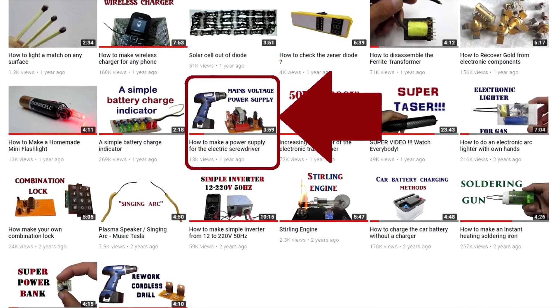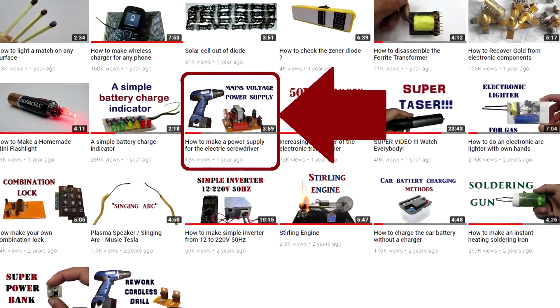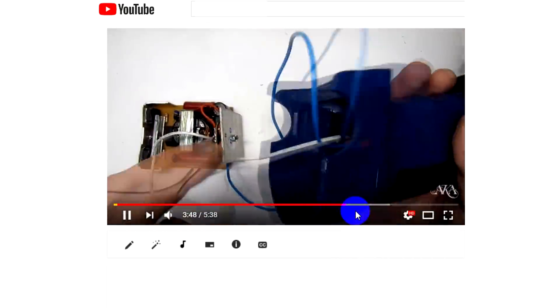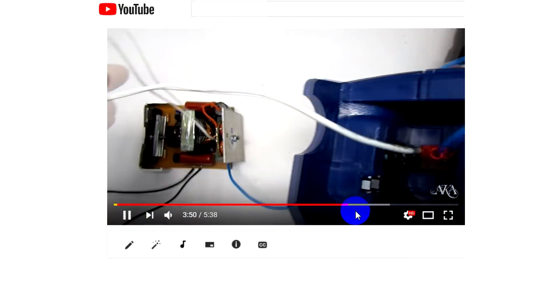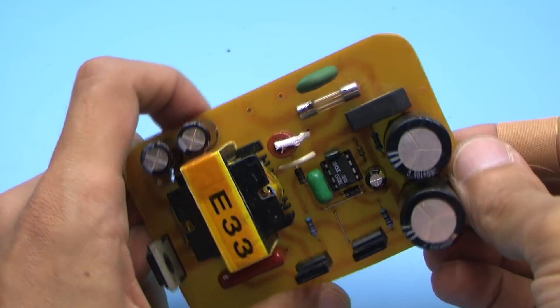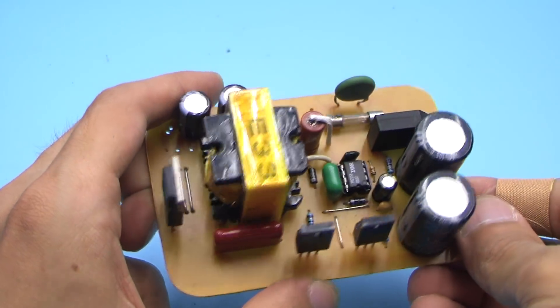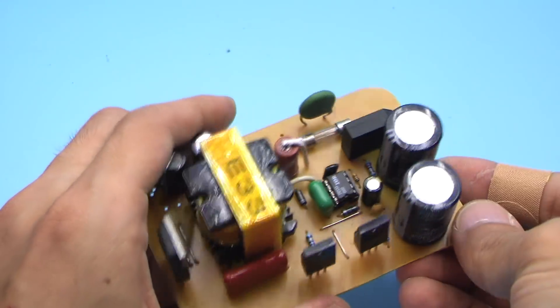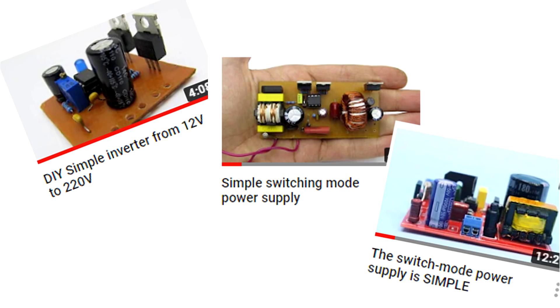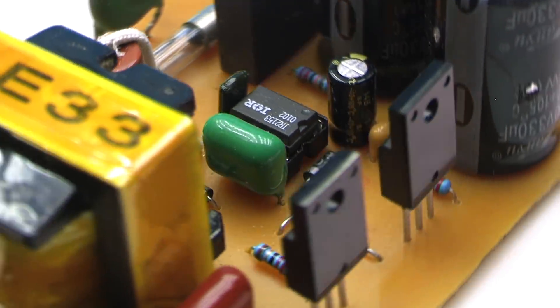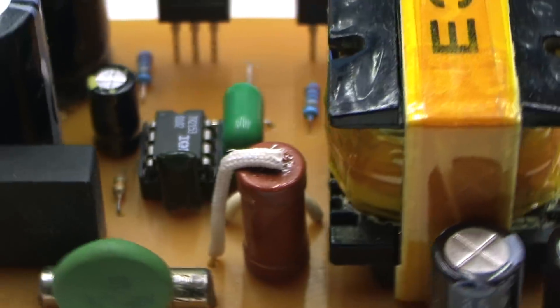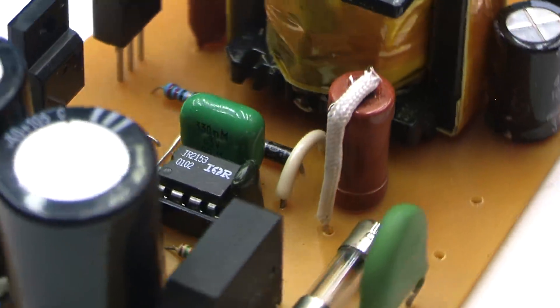I have already shown in one of the videos how it is possible to assemble a powerful power supply for a screwdriver based on a converted electronic transformer. And in order not to repeat, I decided this time to make a power supply on chip IR2153. Well, I'm not gonna be conning since half of the channel is filled with impulse power supplies on this chip. But what can I do if the power supplies on it are simple and cheap? Probably cheaper is only electronic transformer.